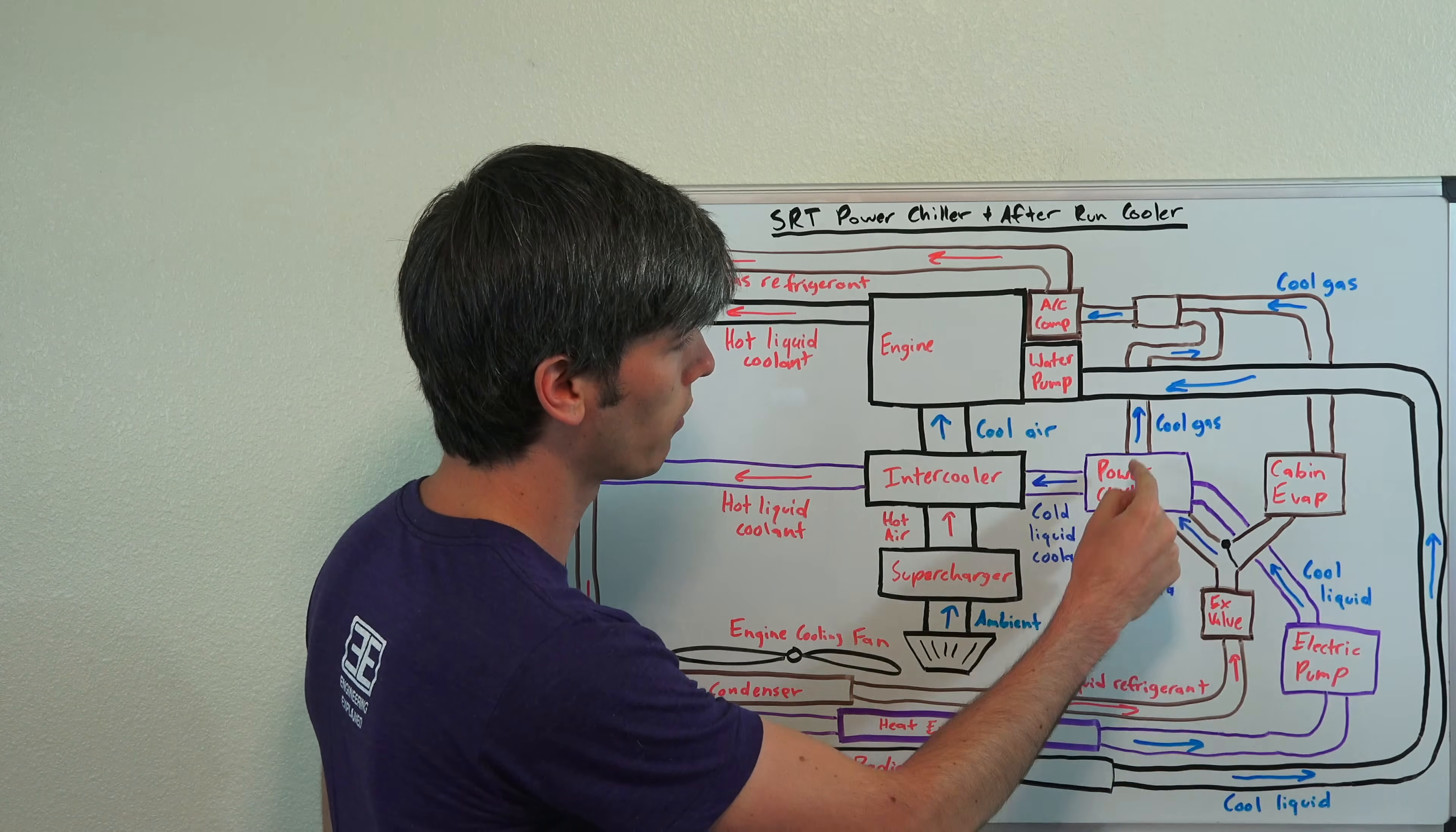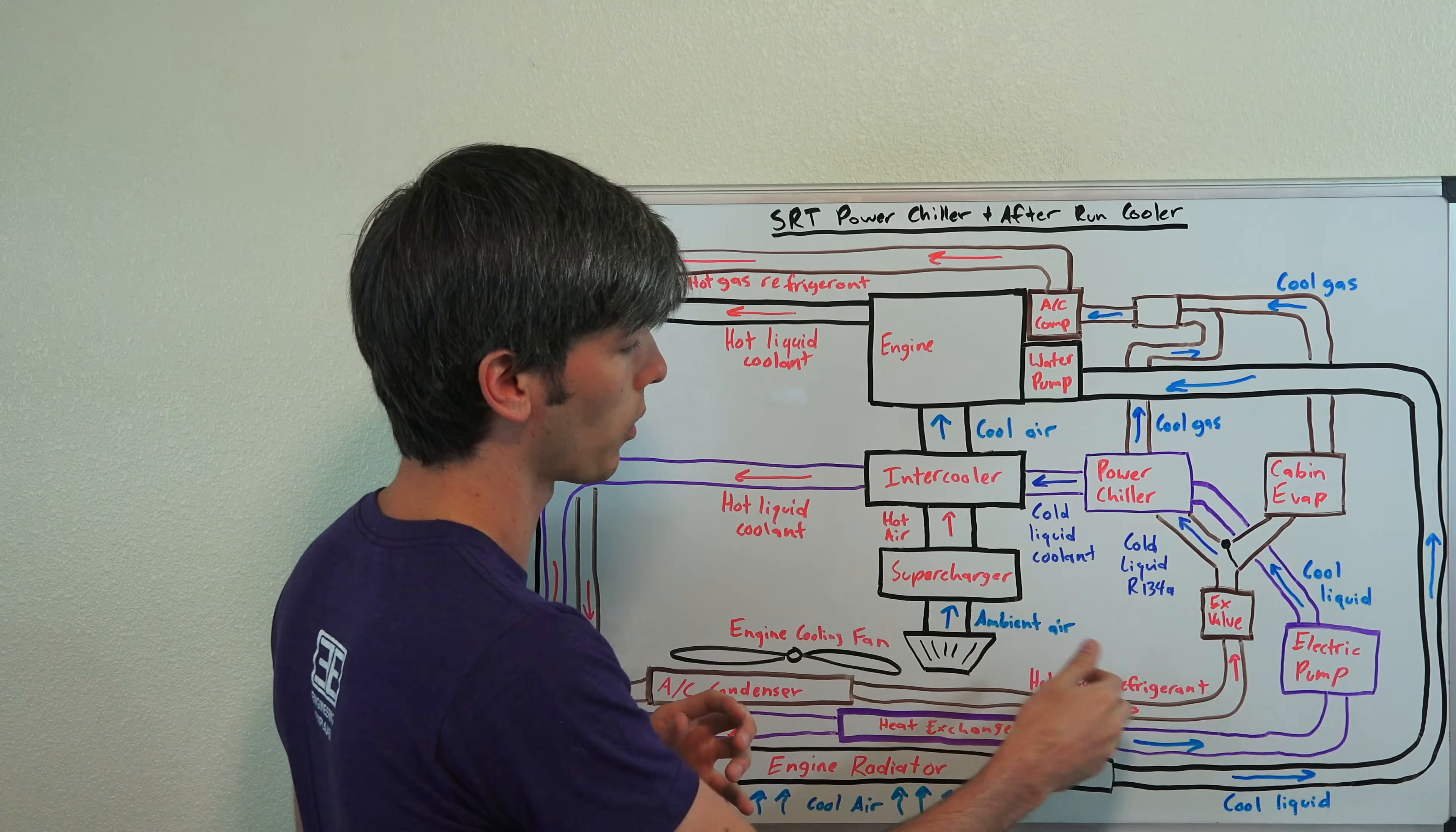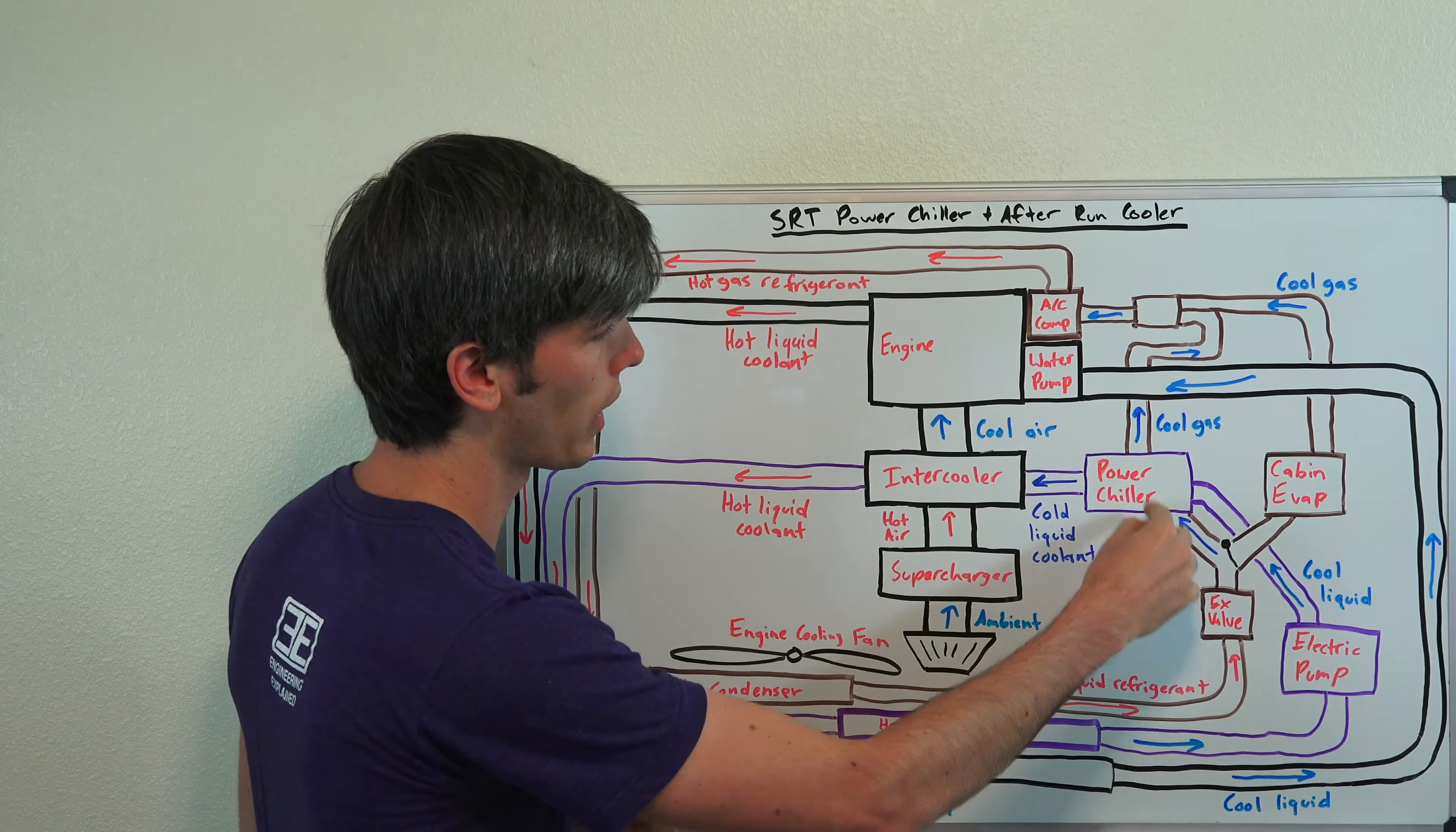So that will travel through. You have this liquid to liquid. Well, essentially liquid, the coolant, the refrigerant will eventually turn into a gas as it expands going through that power chiller.